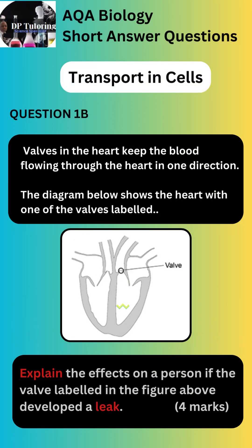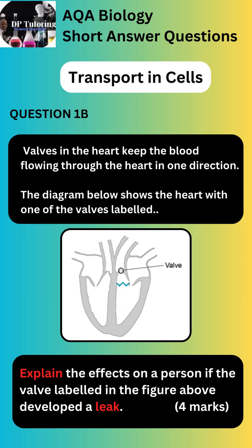Part B of the question shows a diagram of different valves in the heart. AQA asks you to explain the effects on a person if the valve labeled in the figure developed a leak. This question is worth 4 marks. You need to think about the role of the heart in pumping blood around the body, and what will happen if valves get damaged. Pause the video and think about your answer before you continue.